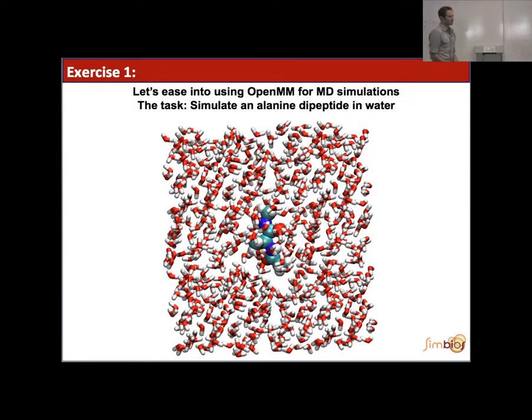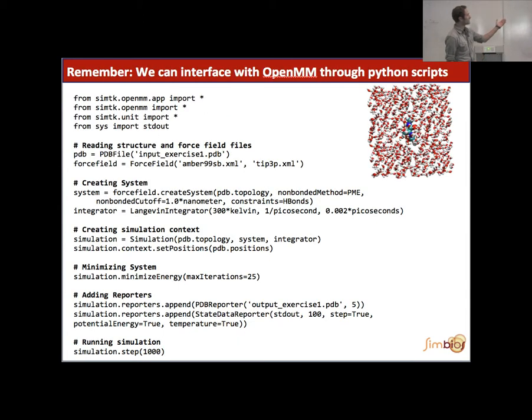Exercise 1 is a fairly straightforward little system. It's an alanine dipeptide that we have in a water box. The input file looks like this, where you obviously import these different modules. You specify how you read the structure and what force field you're using, what water model you're using.